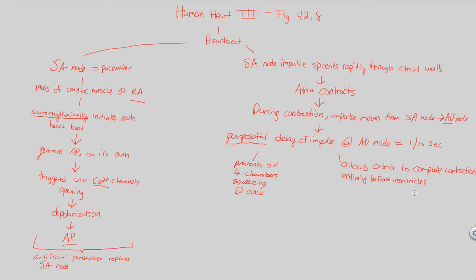When you purposefully delay and allow the atria to complete their contraction before the ventricles contract, you are essentially allowing the ventricles to fill completely with blood — as much blood as they possibly can. A complete atrial contraction means a complete flow of blood to the ventricles, which allows the ventricles to fill up completely to ensure the most blood can be pumped away from the heart. This successful filling and pumping is what the purposeful one-tenth-of-a-second delay at the AV node ensures.